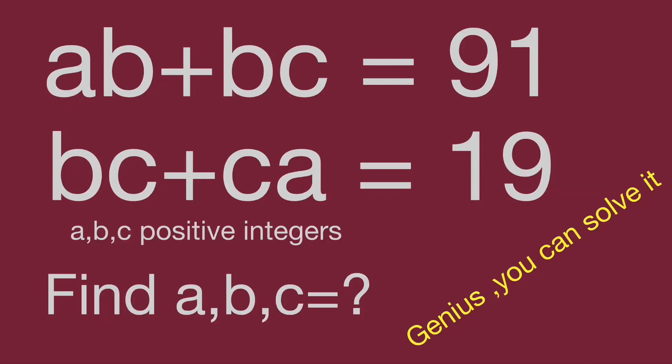Hello, you are watching Barahippo Math Genius Riddle. We have two equations: ab + bc = 91 and bc + ca = 19.